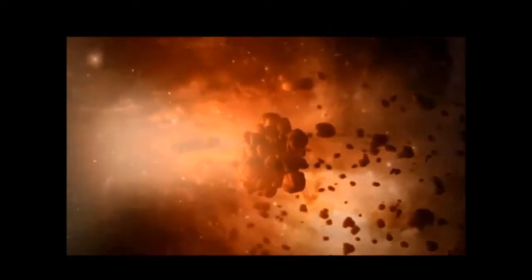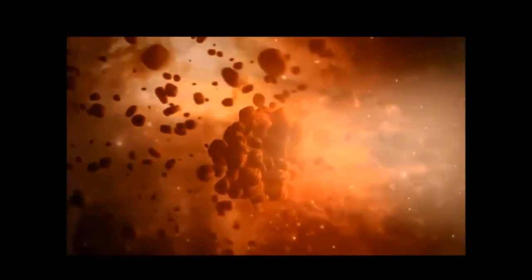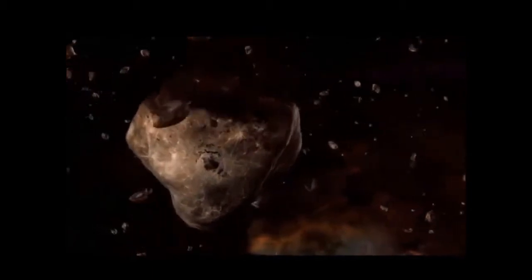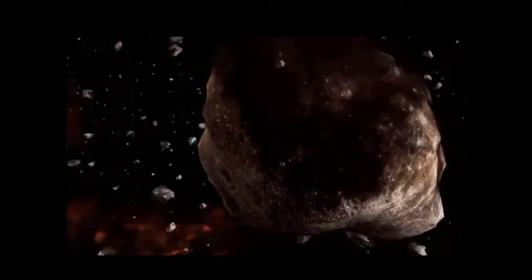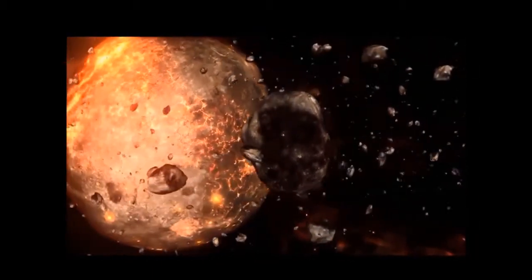They grew into smaller pieces of rock orbiting the Sun. Over the next few million years, some collided and grew bigger, and the biggest object was the molten Earth.